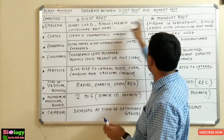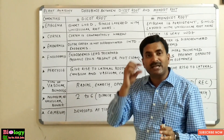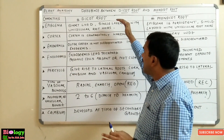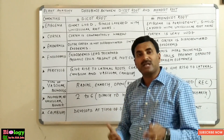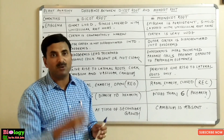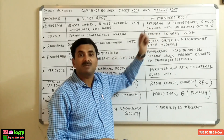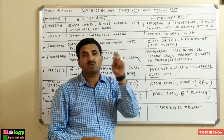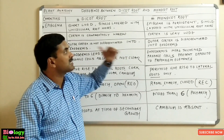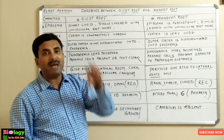In the dicot root, the epiblema is short-lived — it is present for a short while only and soon disintegrates. It is single-layered and has unicellular root hairs. In the monocot root, the epiblema is persistent, meaning it is long-lived and does not disintegrate fast. It is also single-layered with many unicellular root hairs.